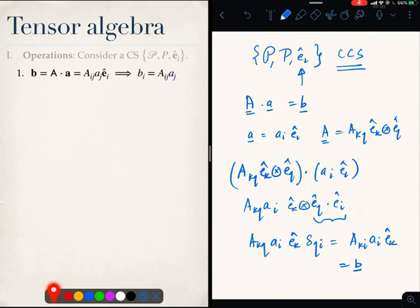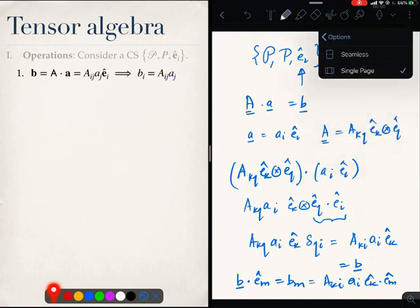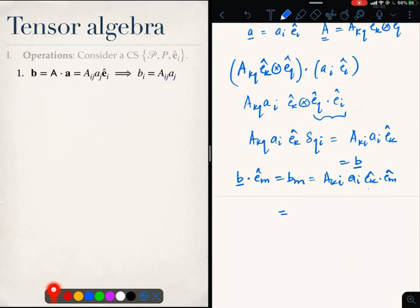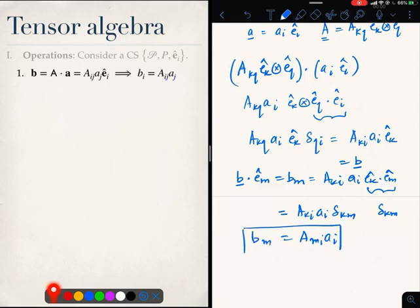So, how will we get the components of b? Well, we simply need to project b onto some unit vector and that will be b_m and this will be A_ki a_i e_k dot e_m. Now this becomes delta_km, so this is A_ki a_i delta_km equal to A_mi a_i and that is the same as b_j = A_ji a_i because I can change this free index to j, this free index to j, this free index to j, this dummy index to i and get that answer.